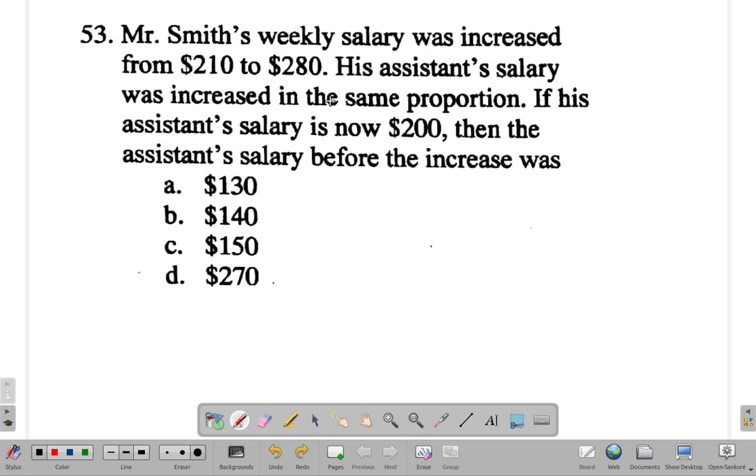So the proportion of the increase for Mr. Smith's salary - if it had doubled it would be $420, but it had not doubled. What did it do? It would be 280 over 210. That's what happened to it.